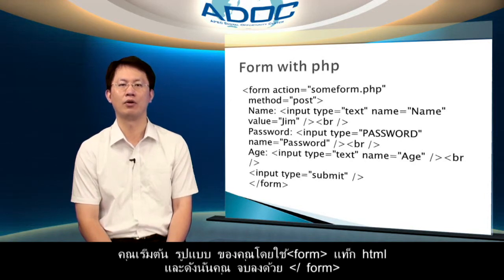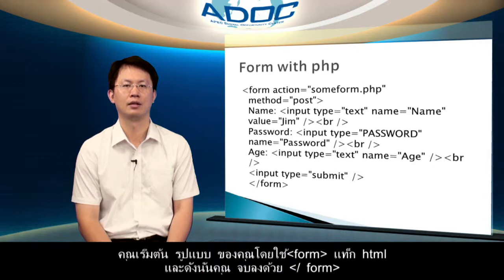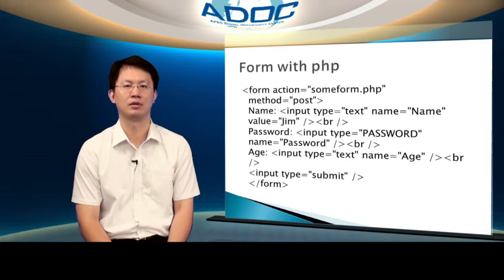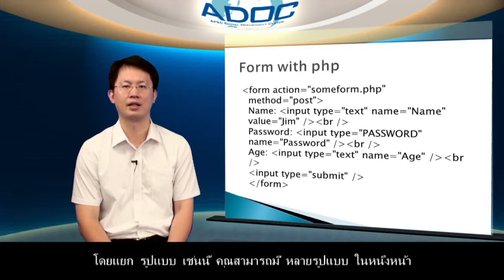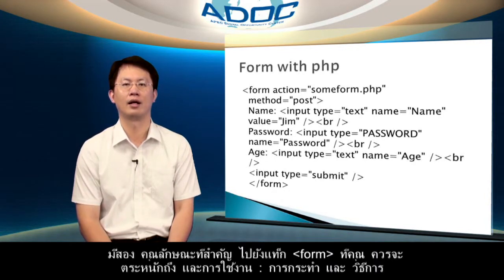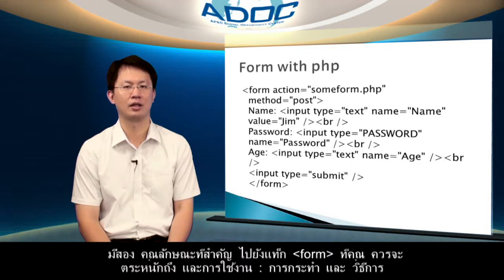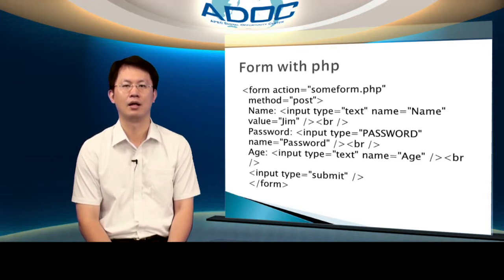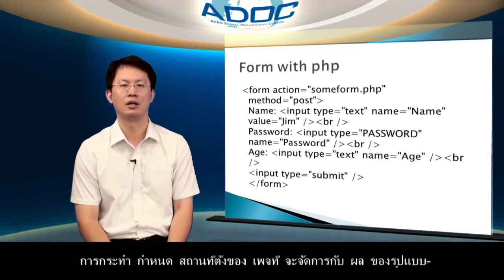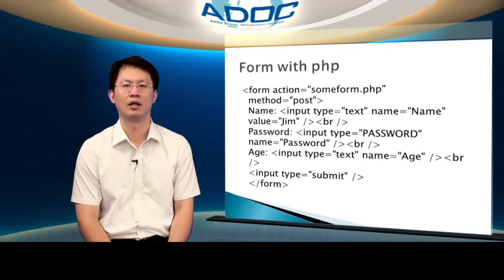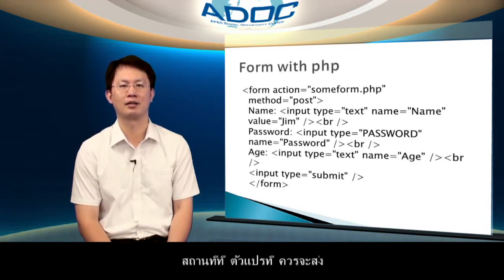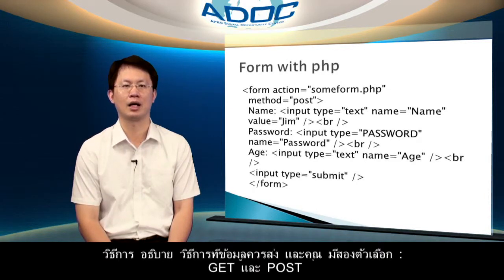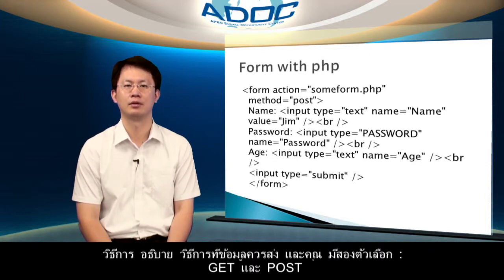You start your form using the form HTML tag, and therefore you end with slash form. By separating forms like this, you can have multiple forms on one page. There are two key attributes to the form tag that you should be aware of and use: action and method. An action sets the location of the page that will handle the results of the form — the place where the variables should be sent. A method describes how the data should be submitted, and you have two options: GET and POST.